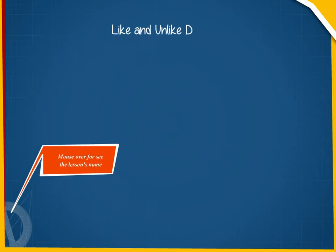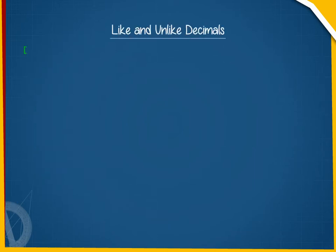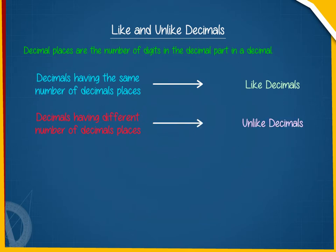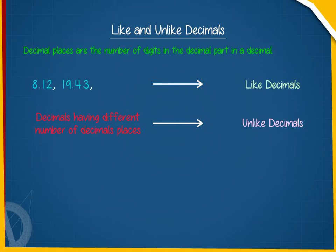Like and unlike decimals. Decimal places are the number of digits in the decimal part of a decimal. The decimals having the same number of decimal places are called like decimals, and the decimals having different number of decimal places are called unlike decimals. For example, 8.12, 19.43, and 123.63 are like decimals because each has two decimal places.